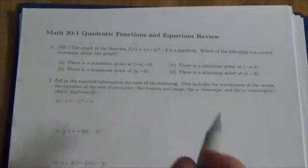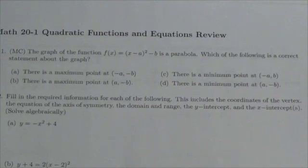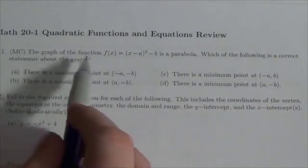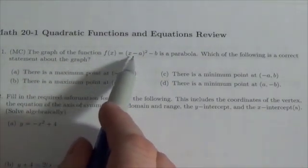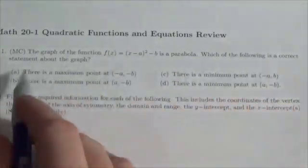So I'm going to take a quick look at question number one here. I'll zoom in just a little bit. Okay, this is a multiple choice question. It says the graph of the function f(x) equals (x-a)^2 minus b is a parabola. Which of the following is a correct statement about the graph?